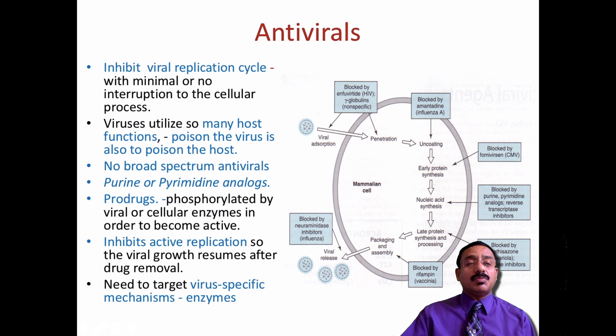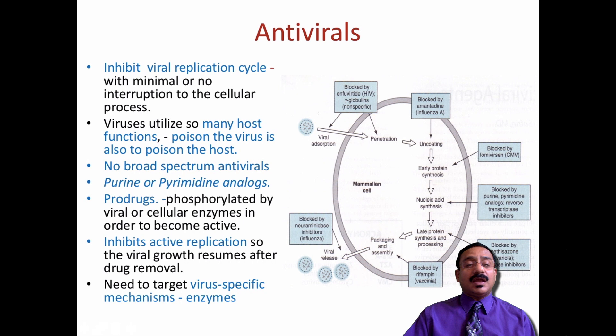Antivirals aim at many areas of the replication cycle. Number one, they inhibit viral replication with minimal or no interruption to the cellular process — they should stop viral replication but not the replication of the human cell. Since viruses use so many host functions, using an antiviral has to be a poison only to the virus and not to the host, so there are no broad-spectrum antivirals.